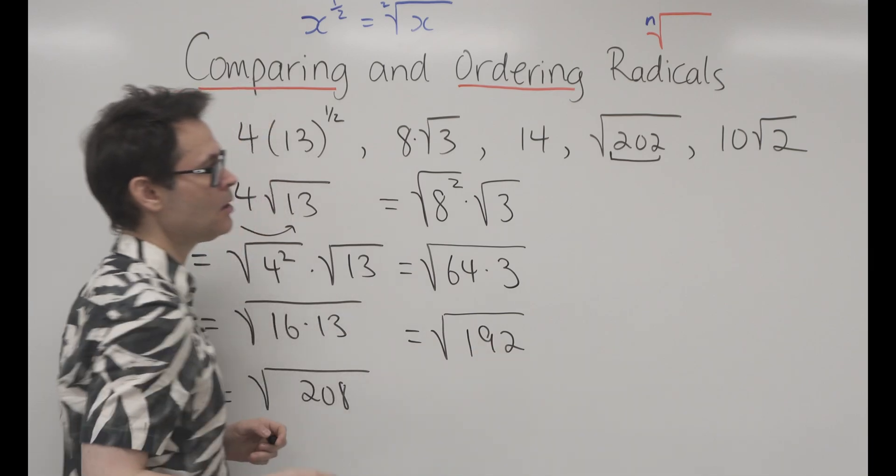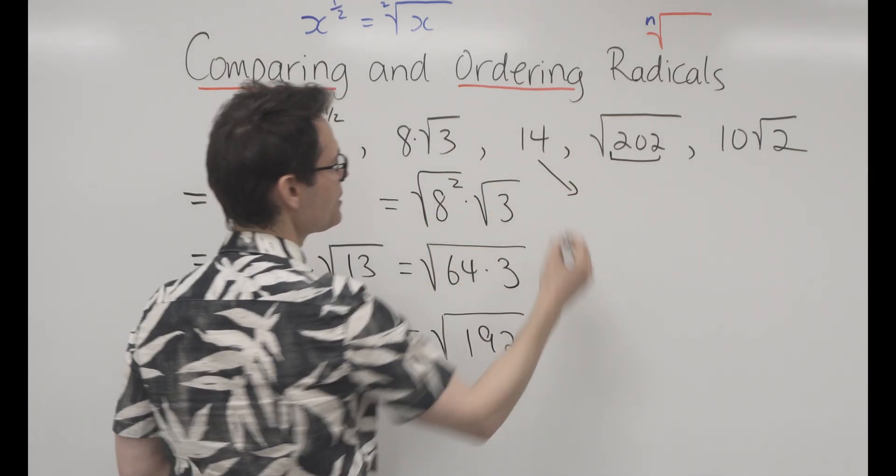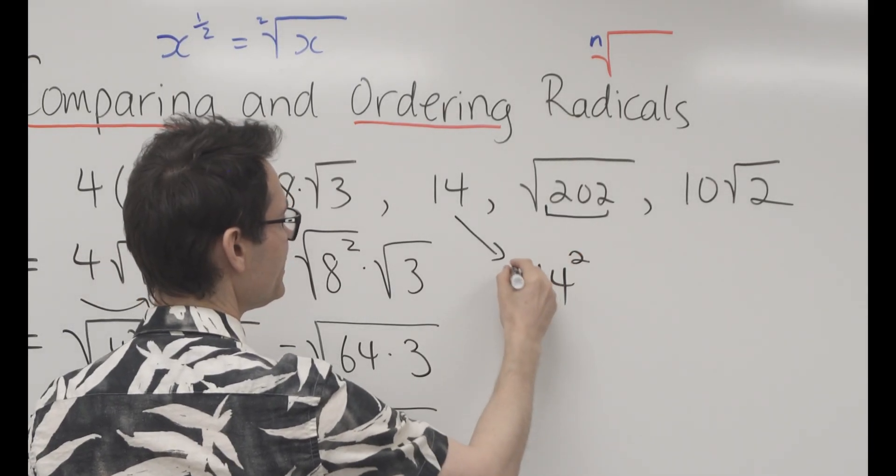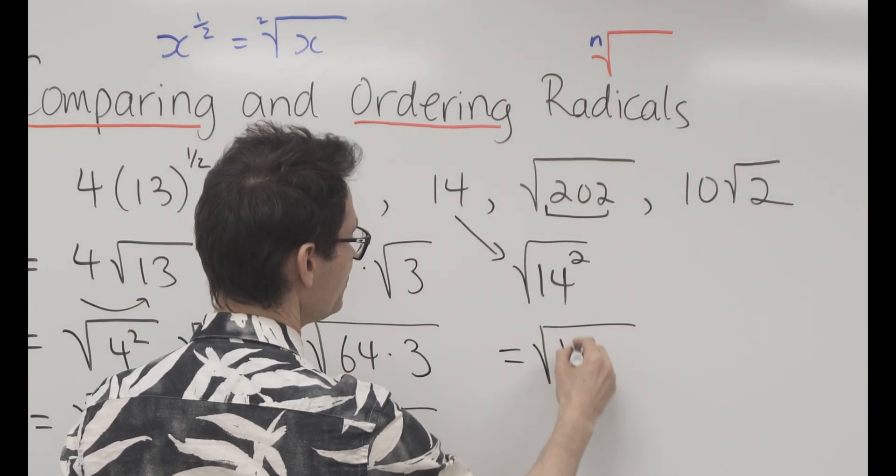I don't have to do anything to root 202, but 14 can be written as a radical, like any number. First you square it, and then you square root it. So that's going to be the square root of 196.